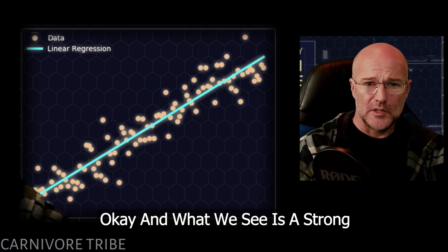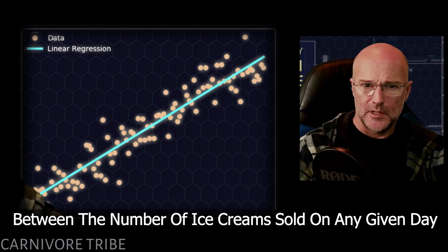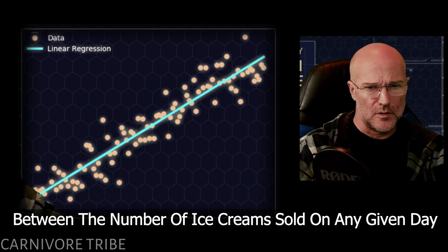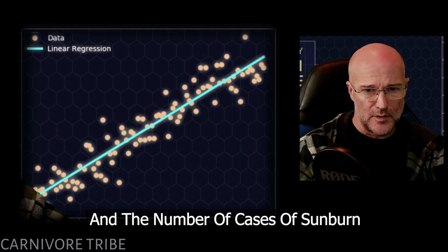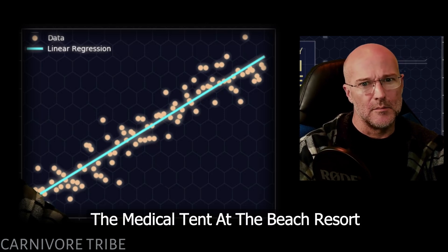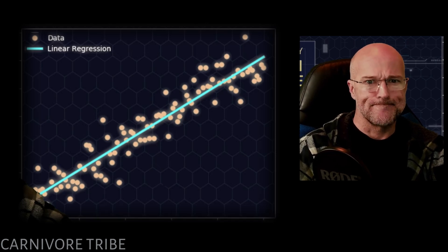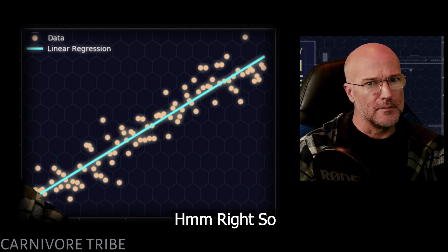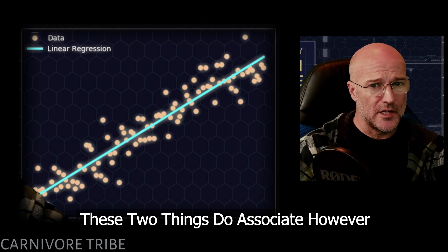What we see is a strong, positive, and clear prediction between the number of ice creams sold on any given day and the number of cases of sunburn reported to and treated by the people in the medical tent at the beach resort. So there we have a clear case of association — these two things do associate.